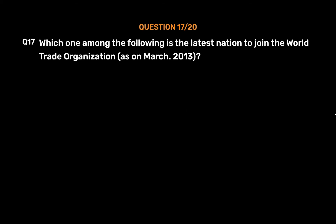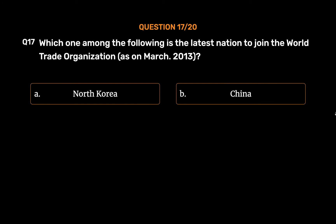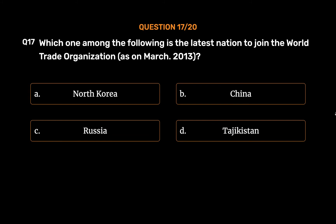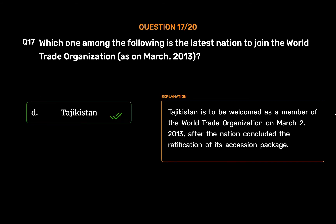Question No. 17: Which one among the following is the latest nation to join the World Trade Organization, as on March 2013? Option A, North Korea; Option B, China; Option C, Russia; Option D, Tajikistan. The correct answer is Option D, Tajikistan. Tajikistan was welcomed as a member of the World Trade Organization on March 2, 2013, after the nation concluded the ratification of its accession package.